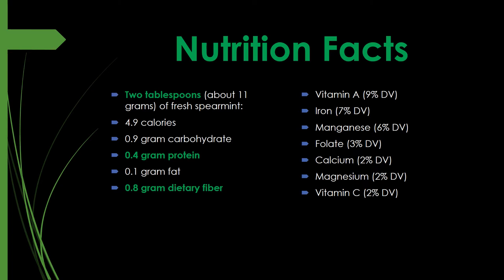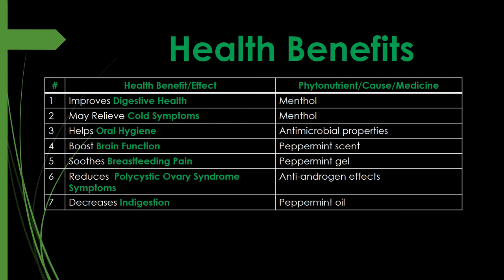Plant foods do a really good job at offering both protein and fiber. Fiber is nature's plumber — it keeps your tubes clean, particularly your arteries and your colon. Moving on, a single serving also provides vitamin A at nine percent DV, iron at seven percent, manganese at six percent, folate at three percent, and calcium, magnesium, and vitamin C each at about two percent DV — all considered not a good source. But remember, this is only two tablespoons, so simply double or triple your servings to get more.